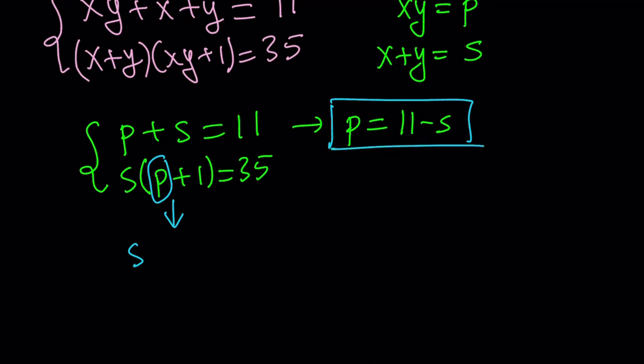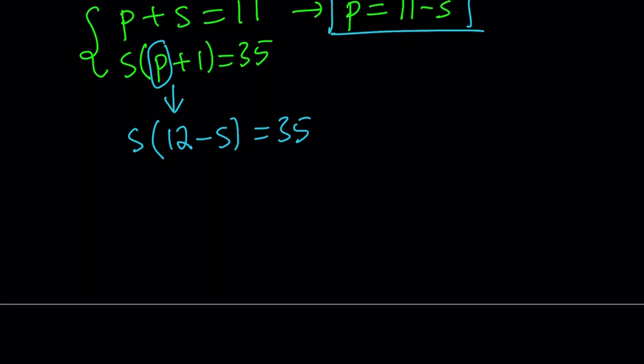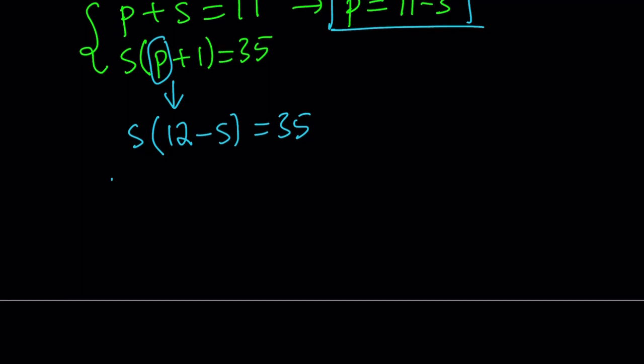And that means I multiply s times p plus 1, which is 12 minus s. And this gives us a quadratic equation in a single variable, which is s in this case. So let's go ahead and distribute and solve this equation. 12s minus s squared is equal to 35. Let's put everything on the positive side.